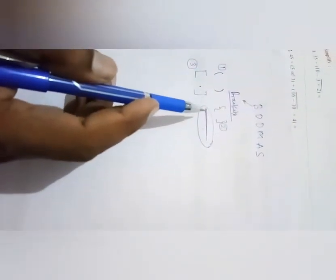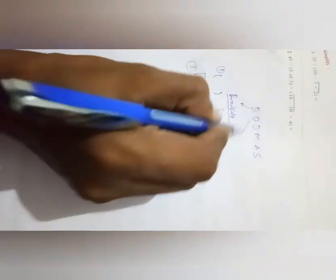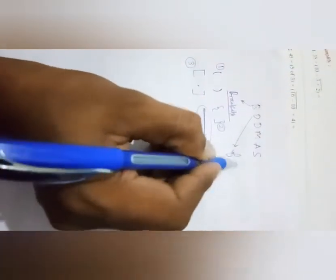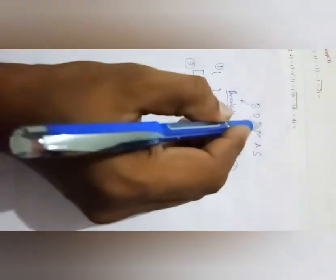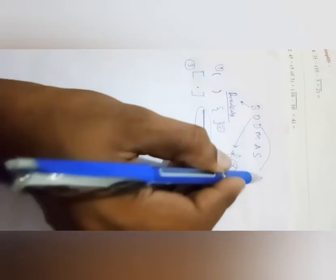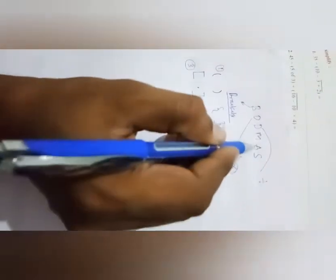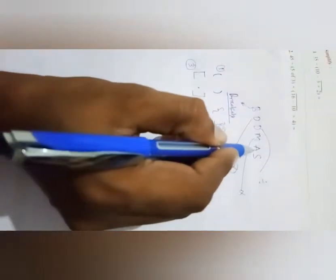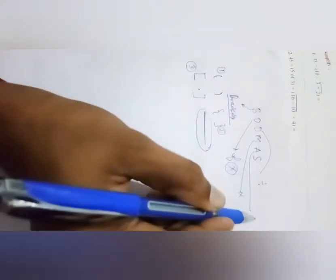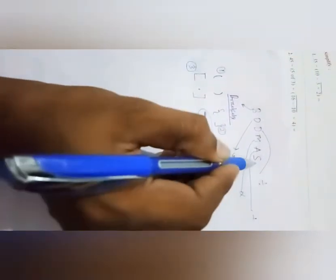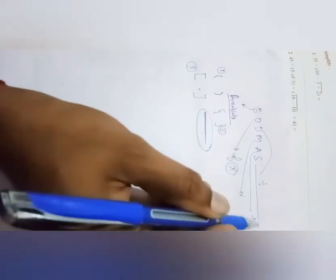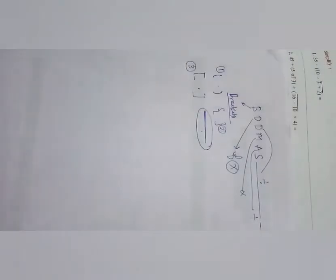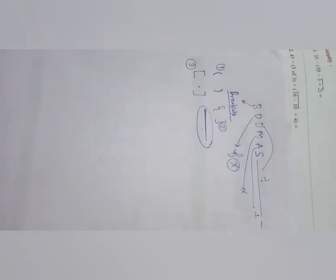O means 'of', and 'of' means multiplication. D means division. M means multiplication. A means addition. S means subtraction. That is all about BODMAS.